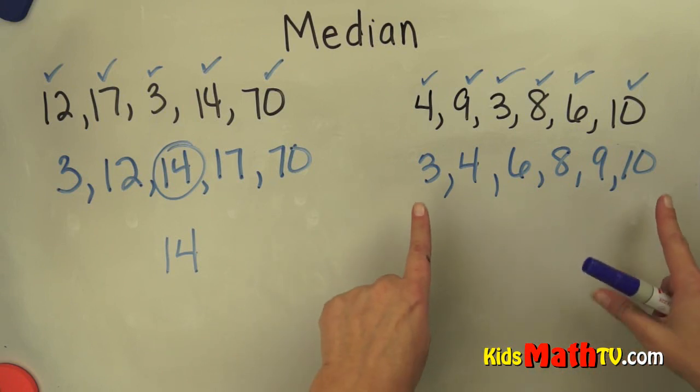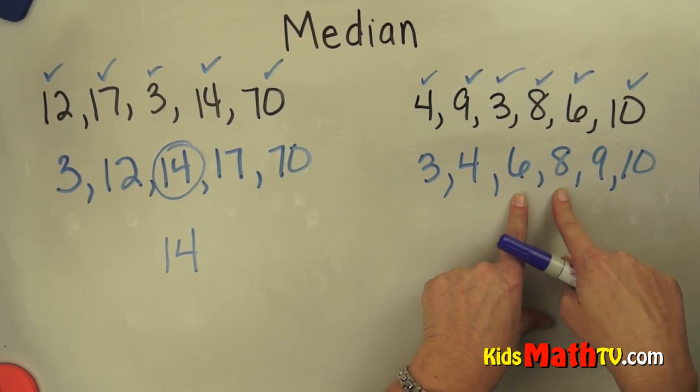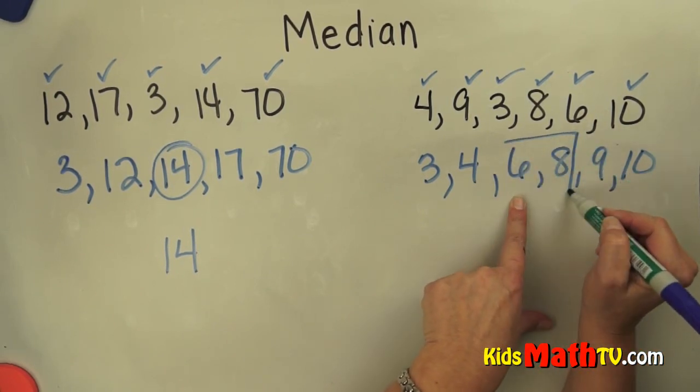So I want to find the middle number. Again, I start from the outside and keep jumping in until I find the middle number. In this case, there's actually two middle numbers.